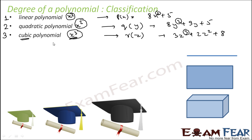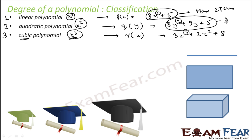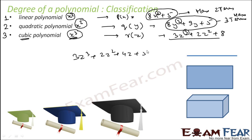Please also note that a linear polynomial can have at most 2 terms. Similarly, a quadratic polynomial can have at most 3 terms. And a cubic polynomial can have at most 4 terms. For example: 3z cubed + 2z squared + 4z + 5 — that's 4 terms: 1, 2, 3, 4.